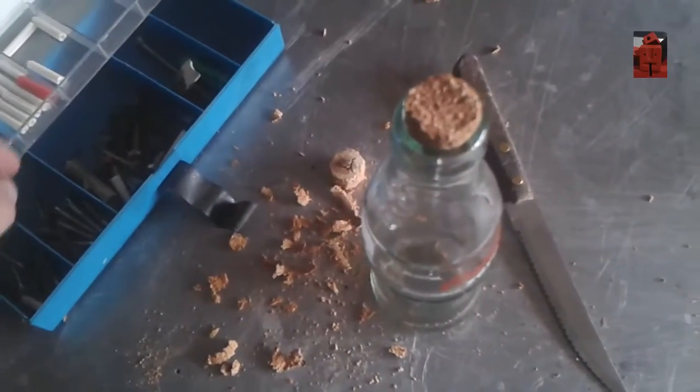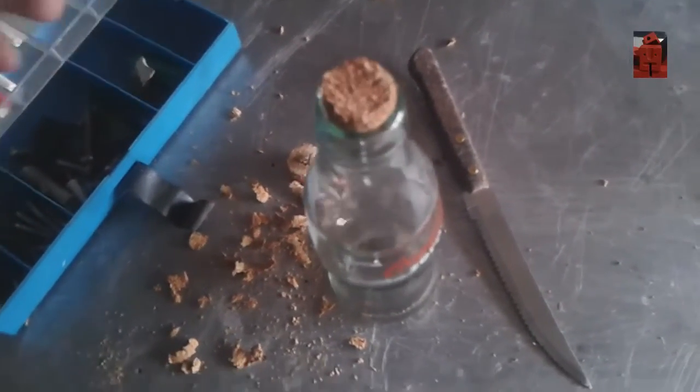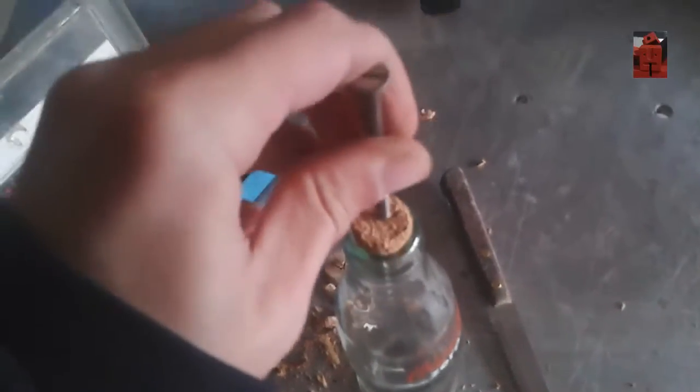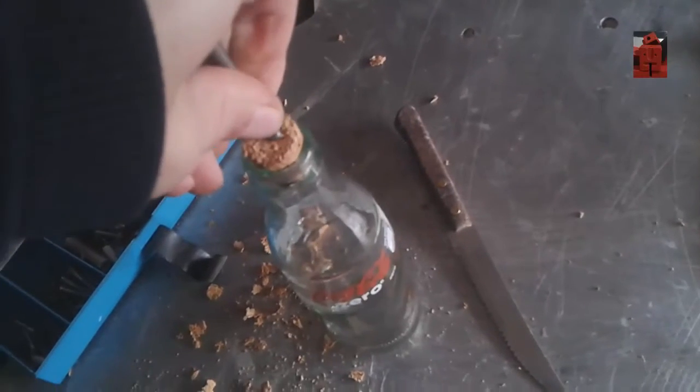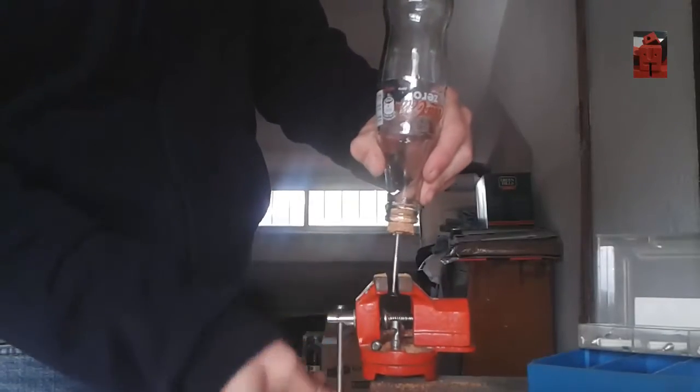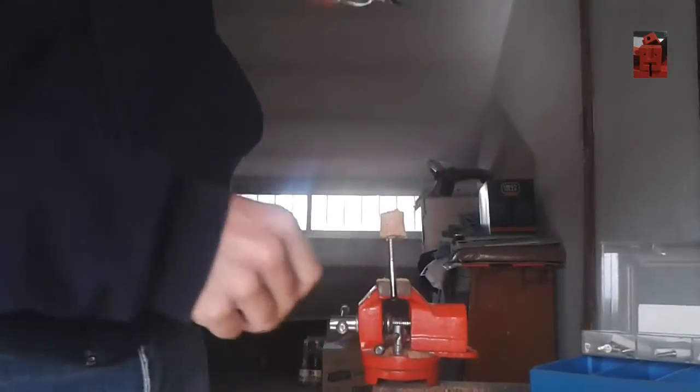So if you ever get your cork stuck in the bottle like I did, you can use a screw to take it out. It's pretty easy. Just put the screw. You can use pliers if you don't have a vice.